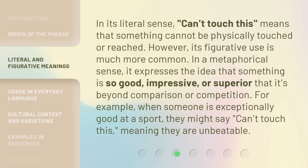In its literal sense, can't touch this means that something cannot be physically touched or reached. However, its figurative use is much more common. In a metaphorical sense, it expresses the idea that something is so good, impressive, or superior that it's beyond comparison or competition. For example, when someone is exceptionally good at a sport, they might say can't touch this, meaning they are unbeatable.